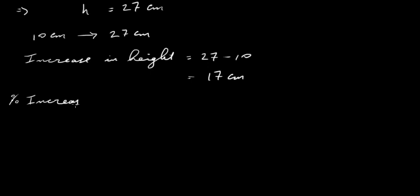so how much has 10 increased by? The percentage increase in height is just 17 divided by the original height, which was 10, multiply that by 100. So what you get here then is 17 divided by 10, which is 1.7. 1.7 multiplied by 100 is 170%.